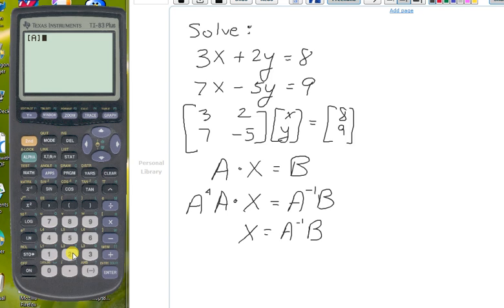To take the inverse of matrix A, we use the X to the negative 1 power, that gives us inverse. And now we multiply that by matrix B, we use the matrix menu to pull up matrix B, which is 2. And we press enter.